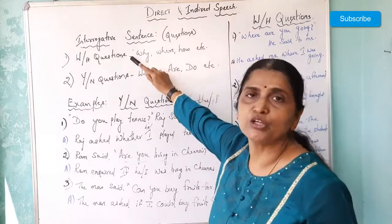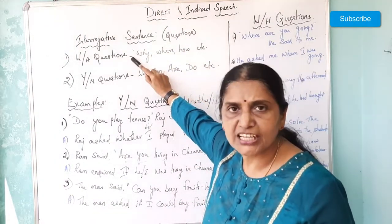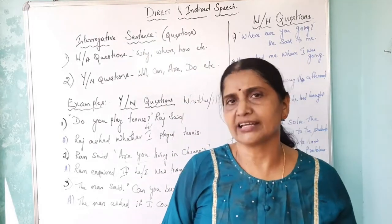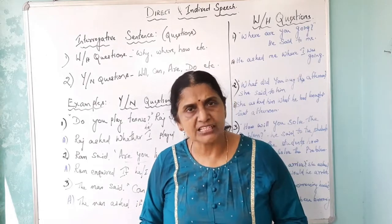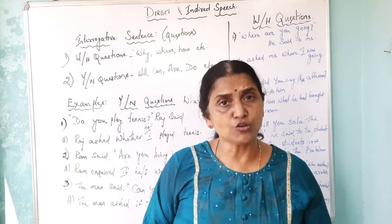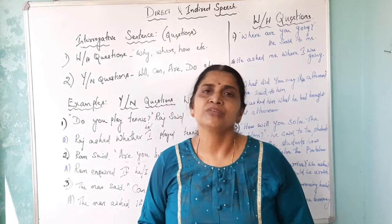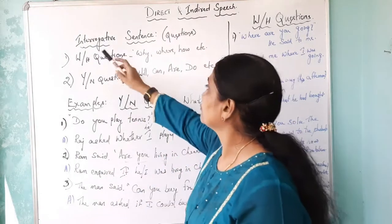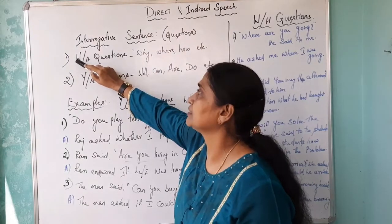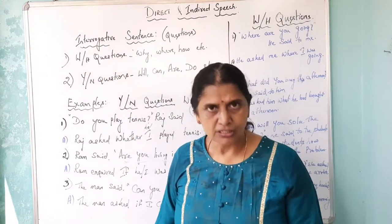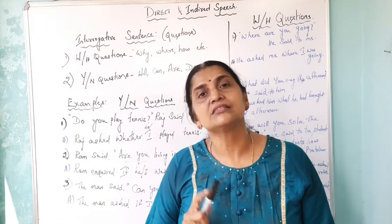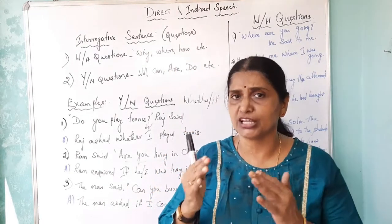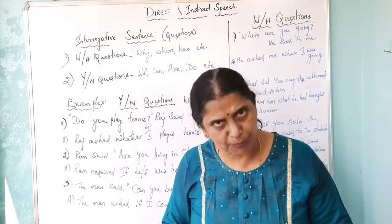Now, the next part is WH questions. WH questions start with W or H — for example: 'Why are you late?' 'Where did you go?' 'How did you buy?' 'When are you coming?' All these questions start with the letter W or H, which is why we call them WH questions. Let's see how to change WH questions from direct to indirect speech.